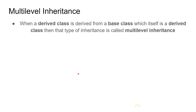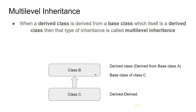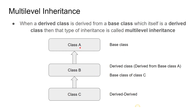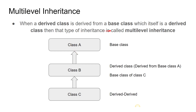The second type is multi-level inheritance. When a derived class is derived from a base class which itself is a derived class. For example, class C is derived from class B, and class B is itself derived from class A. So class C is derived from class B and class B is derived from class A — that is multi-level inheritance.